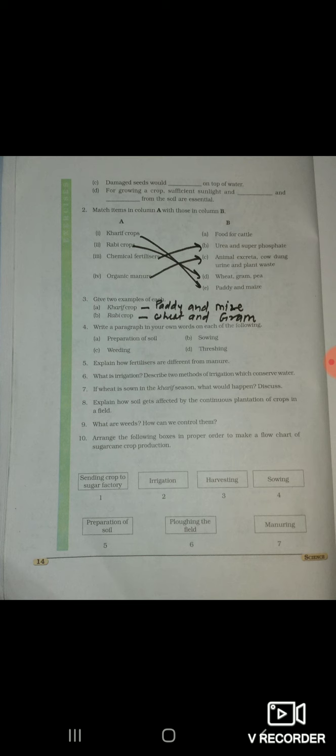Write a paragraph in your own words - yeh nahi aayega beta, aap logon ka four question. Fifth, explain how fertilizers are different from manure, yeh bhi nahi aayenge. Six, what is irrigation, describe two methods of irrigation which conserve water. So, isko ek short question hum bana ke de sakte hain, jaise, what is irrigation, irrigation kya hai. Thik hai, yeh question aa sakta hai.